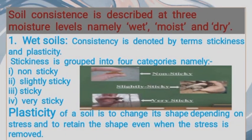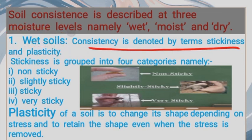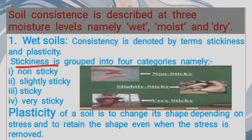Soil consistency is described at three moisture levels: first, wet; second, moist; and third, dry. For wet soil, consistency is measured in terms of stickiness and plasticity. Stickiness is divided into four categories: non-sticky, slightly sticky, sticky, and very sticky.